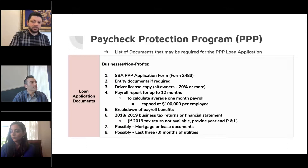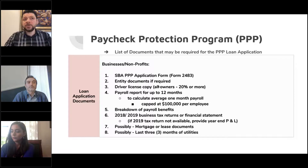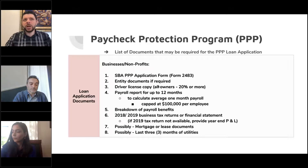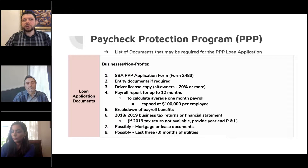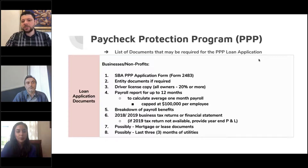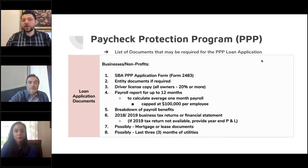Possibly they may also require mortgage or lease documents if it applies, the last three months of utilities, and IRS Forms 940 and 941 — quarterly, and up to March 31st and February 15th if you have payroll. Those are payroll-specific documents.